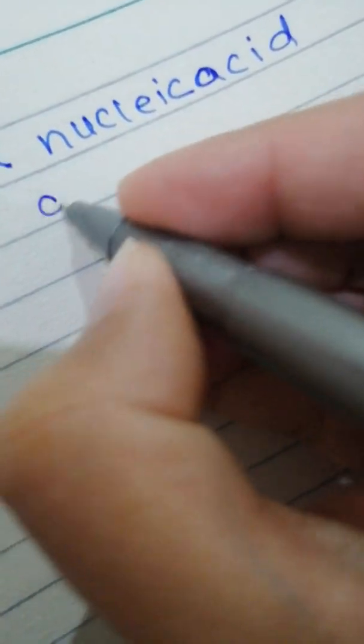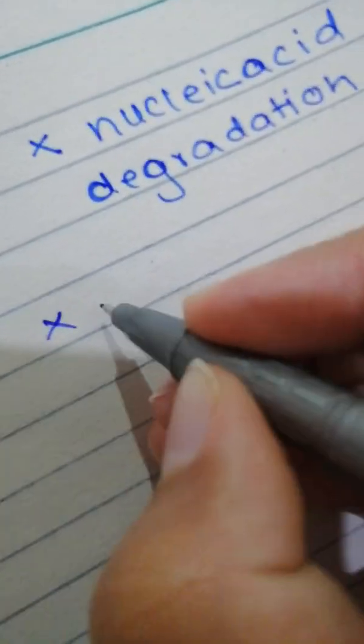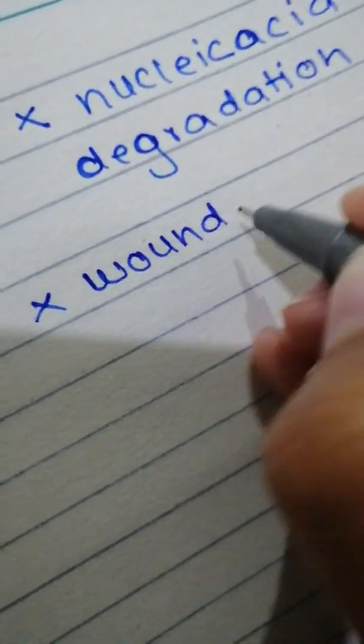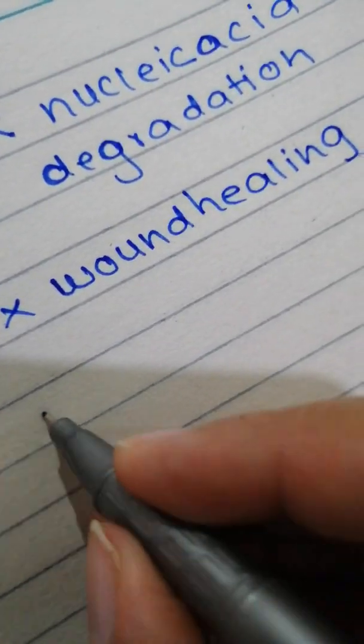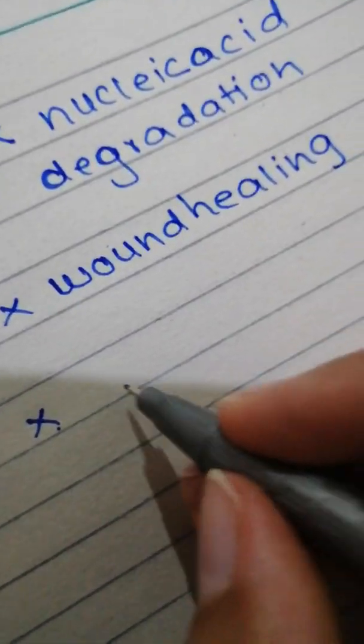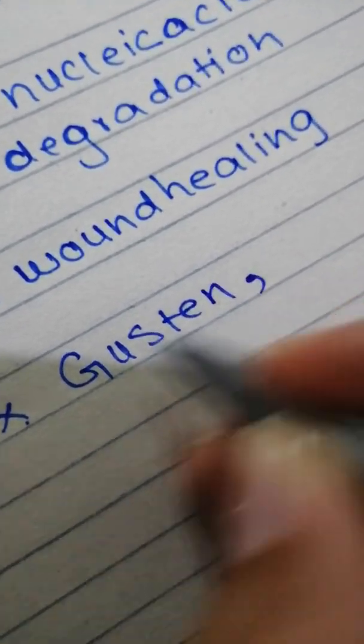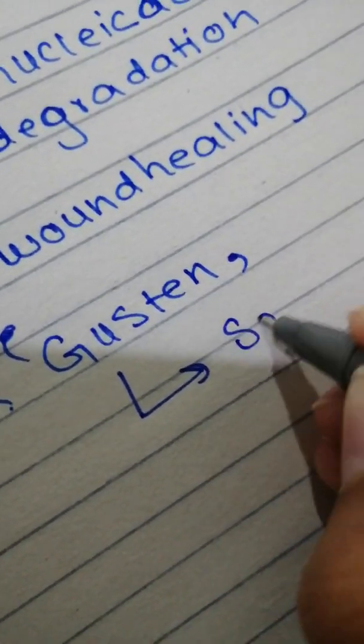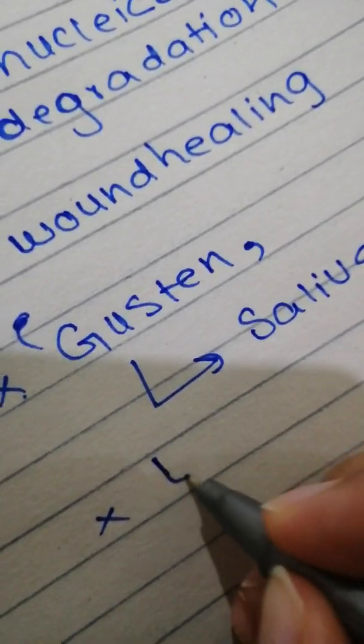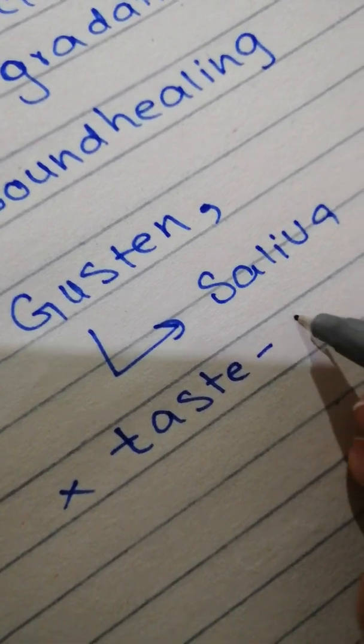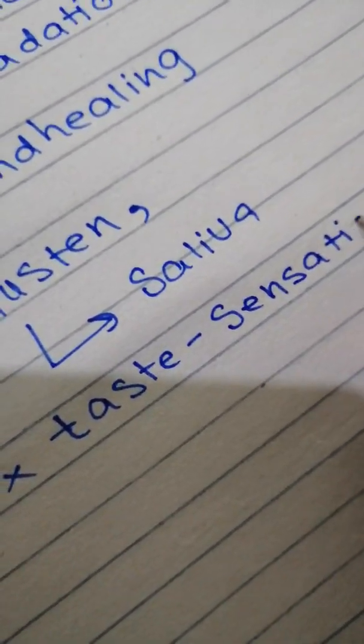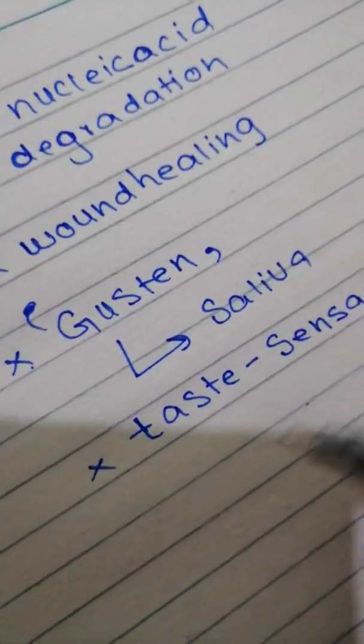Other important uses of zinc can be in nucleic acid degradation and in wound healing, which is why if there is a deficiency of zinc, wound healing is impaired. In addition, we have a protein known as gustin, which is in the saliva, and this protein gustin is very important for taste sensation.